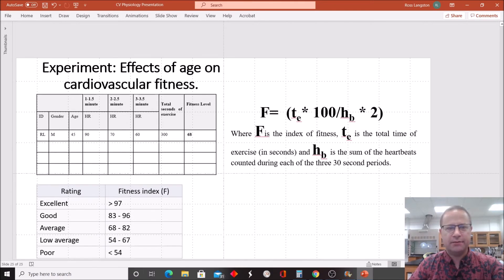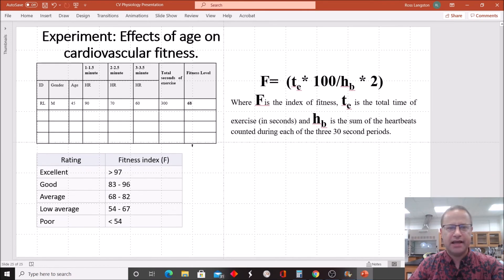Okay, and so we just enter that in the table, and there we can see that I'm 68. Now, this is just for one person. In order to do this analysis, we actually are going to need data from several people in the class and several people of different age groups. So I'll show you how to analyze that data in the next slide.